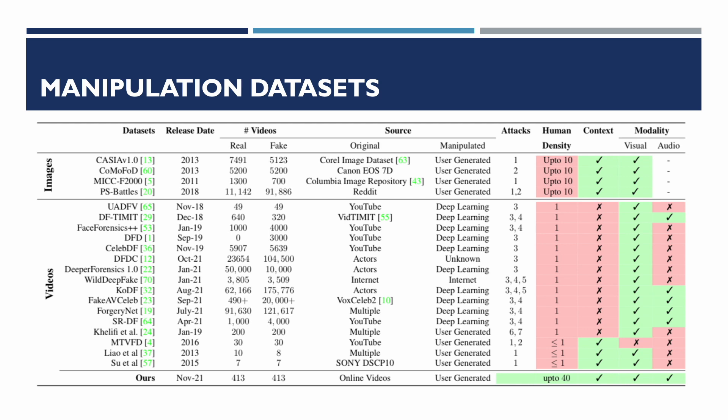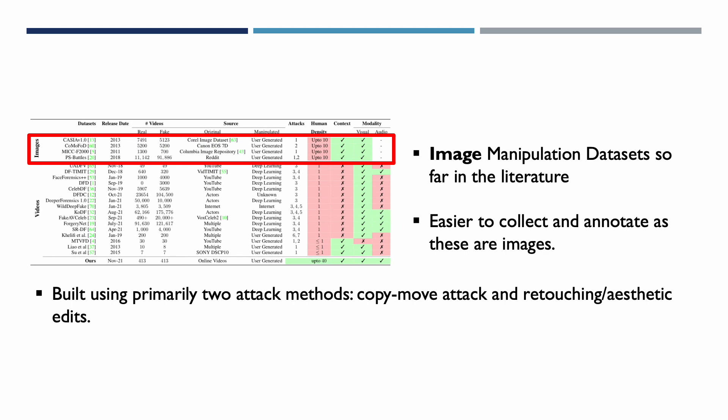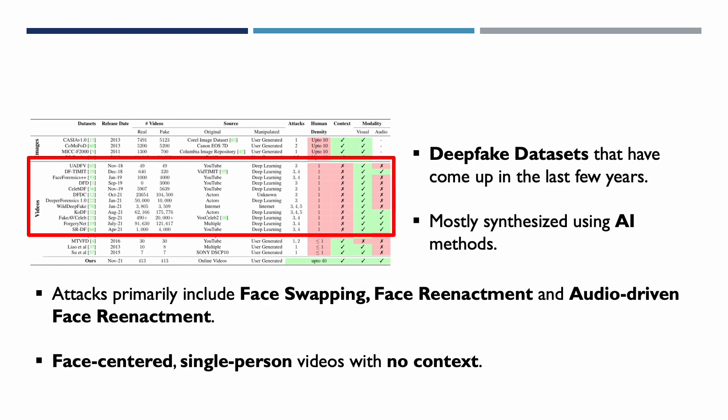Here is a brief summary of all the image and video manipulation datasets from recent years. These are quite large in size — often tens of thousands of images — because they are easier to collect and edit. However, most of these datasets are primarily manipulated by two attack methods: copy-move and retouching or aesthetic edits. The more recent datasets are mostly synthesized using AI methods, with attacks primarily including face swapping, face reenactment, and audio-driven face reenactment. However, these are face-centered, single-person videos with no context at all.